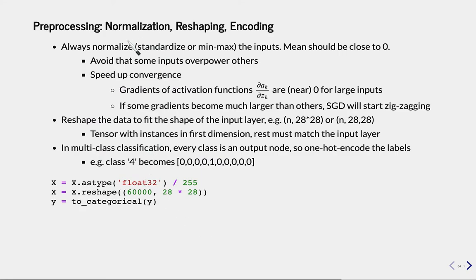We have to do a bit of preprocessing before we can train. First of all, we always need to normalize our data. When I mean normalize, I mean either standardize, so bring all the data around 0 and standard deviation 1, or min-max, so bring all the values between 0 and 1. The main goal here is to bring the mean close to 0. Because it has to do with vanishing gradients and exploding gradients.